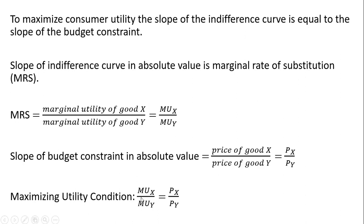So to maximize utility, the marginal rate of substitution equals the ratio of the prices, price of good X to the price of good Y.